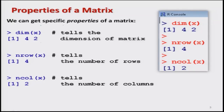For example, there is a command `dim` which means dimension. This dimension command helps us in getting the dimension of a matrix. The syntax is: you write `dim` and inside the bracket you write the name of the variable containing the matrix. In this case, our matrix X is of order 4 by 2, so as soon as I say `dim(X)`, it gives me 4, 2 — meaning 4 rows and 2 columns.